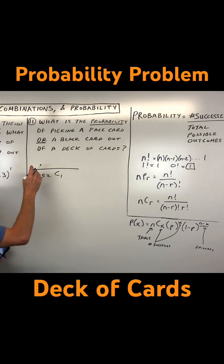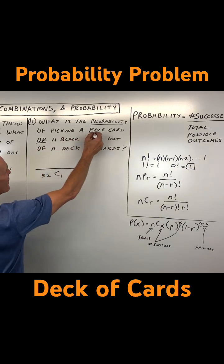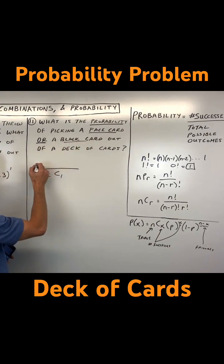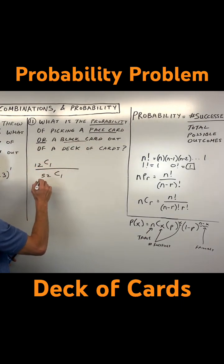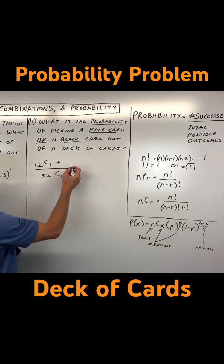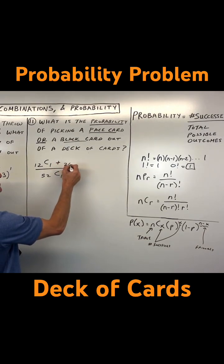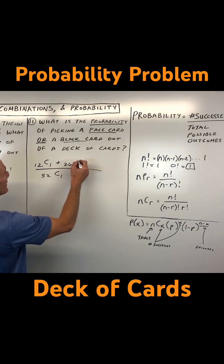We're saying that it's a face card or a black card. There are 12 face cards — how many ways are there to choose one face card? Plus, how many black cards are there? There are 26 black cards, because half are black and half are red. Choose one of those.